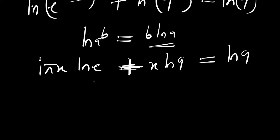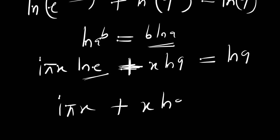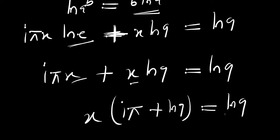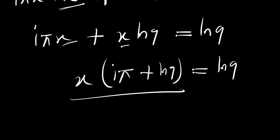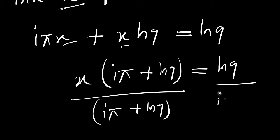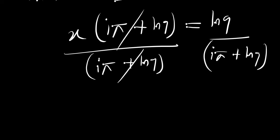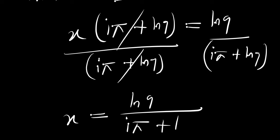Since ln of e is 1, we have i pi x plus x ln of 9 equals ln of 9. We factor out x: x times the quantity i pi plus ln of 9 equals ln of 9. To solve for x, we divide both sides by i pi plus ln of 9, giving us x equals ln of 9 divided by i pi plus ln of 9.